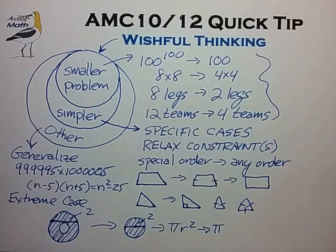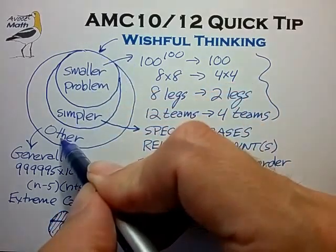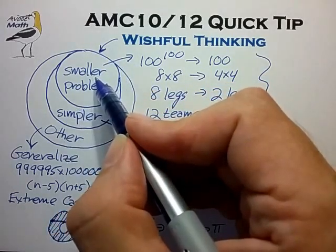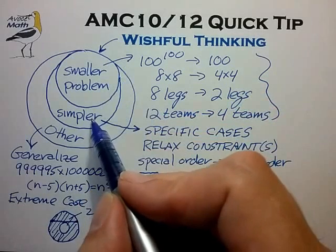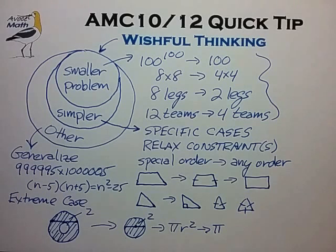That's a good overview of the wishful thinking methods most useful for the AMC. I would pull out these methods roughly in the order shown: the smaller problem is usually the easiest to identify, followed by the simpler problem, while other is very difficult to find, especially in the short time typically given for an AMC problem. Please check out the description section of this video for example AMC problems using these wishful thinking methods. Good luck, and we'll see you at the next video.